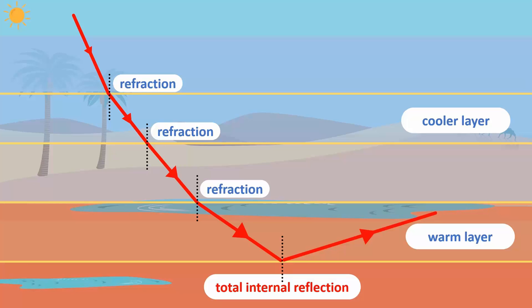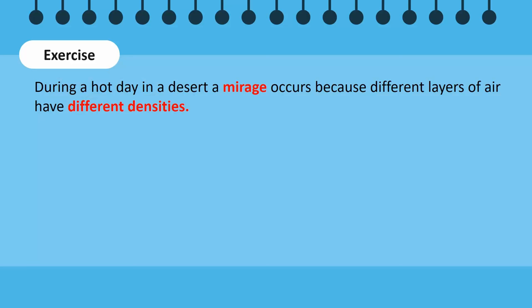A mirage occurs because of the different densities in each layer of air. The difference is caused by different temperatures.